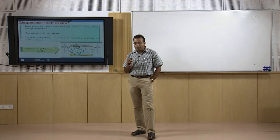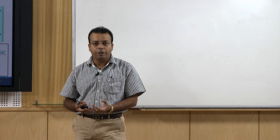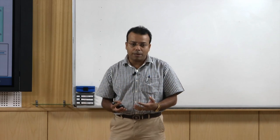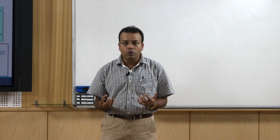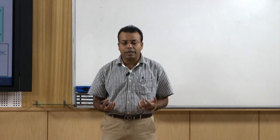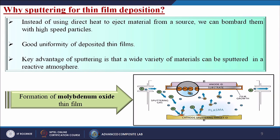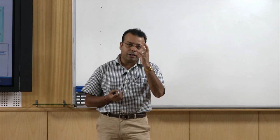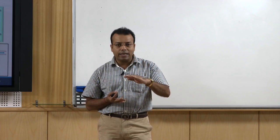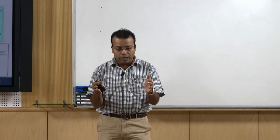We have discussed what sputtering is and how we do it. Now our main concern is why we use sputtering techniques for preparing thin films, compared to other deposition techniques discussed in the last lecture. Instead of using direct heat to eject material from a source, we bombard them with high-speed particles. This gives good uniformity of the deposited thin films and higher purity of the coating, because the ions released from the target come directly and deposit onto the thin film with less chance of impurity, and everything is done in a closed chamber.